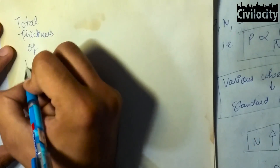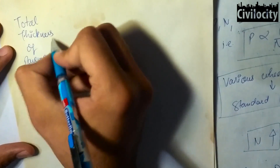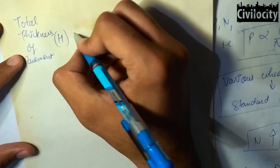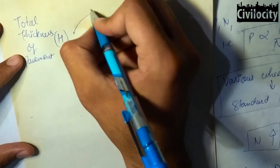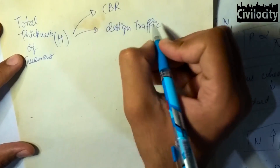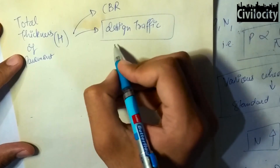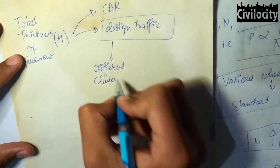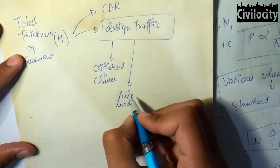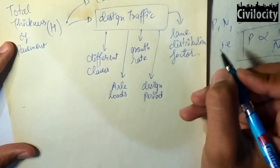Before moving to the next topic, let's discuss design criteria. The total thickness of the pavement is decided based on design factors such as the CBR value of subgrade soil and design traffic. Design traffic is a function of initial traffic of different classes of heavy vehicles, their axle loads, growth rate, design period, and the lane distribution factor.